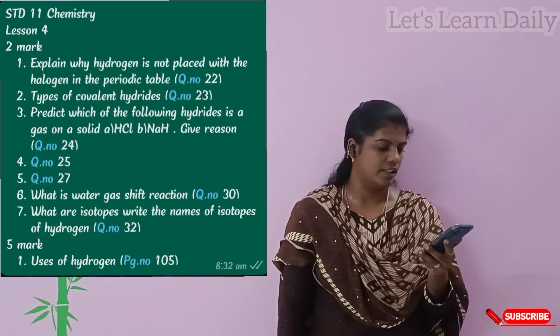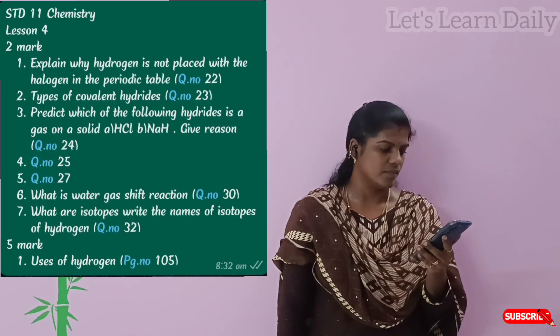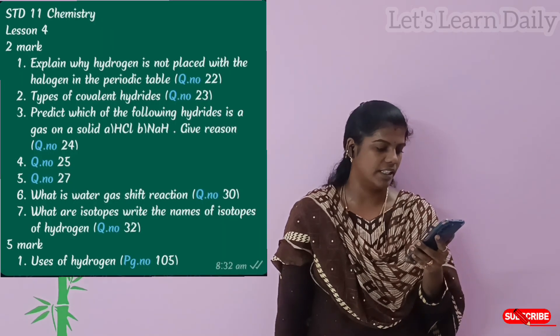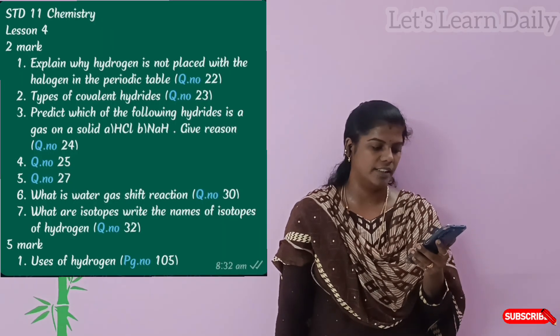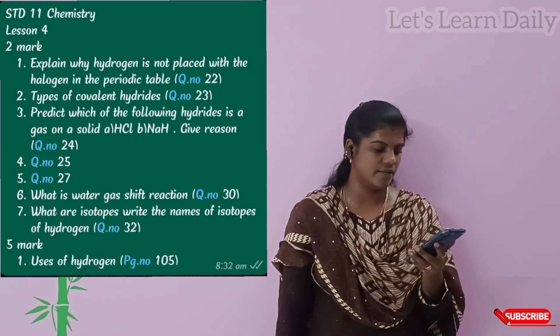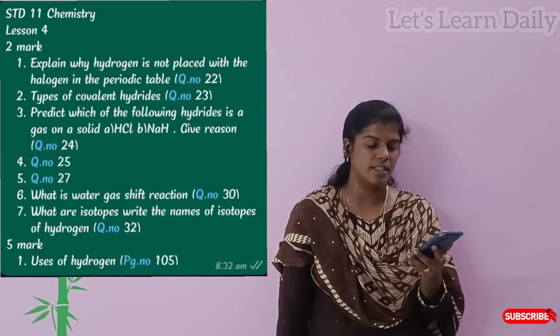Next, 11th chemistry is Lesson 4. The 2-mark question is: explain why hydrogen is placed with the halogens in the periodic table — question number 22.